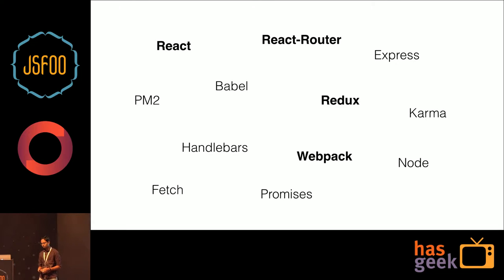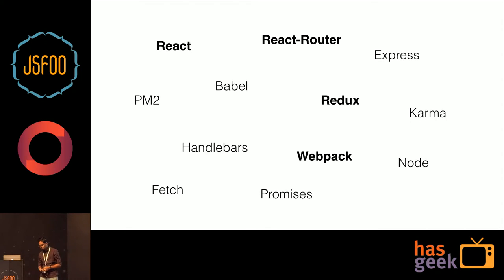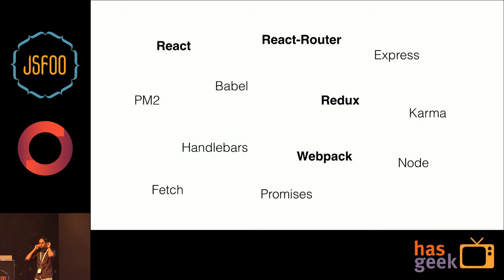This is what the tech stack looks like right now — where we are. We have a bunch of front-end technologies. The most common stack these days on the front end: we are using React, React Router, Redux, Webpack for bundling it all together, and the server side using Express and Node, Karma for our test cases, PM2 to run our applications, Handlebars for our templating, and Fetch and Promises as general browser technologies.